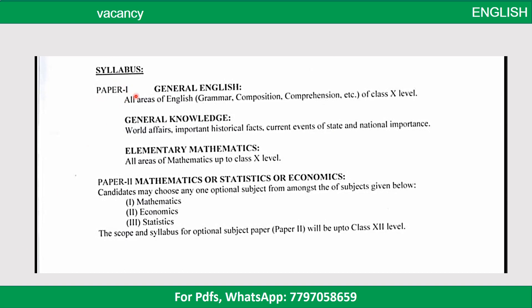In Paper 1, General English covers all areas of English at Class 10 level. General Knowledge covers current affairs of state and national importance. Elementary Mathematics covers all areas of mathematics up to Class 10 level. For Paper 2, you have three choices — Mathematics, Economics, or Statistics — and whichever optional subject you choose, the scope and syllabus will be up to Class 12 level.